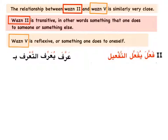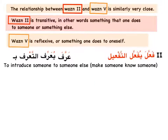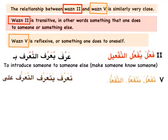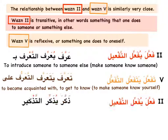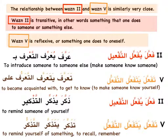For example: عَرَّف يُعَرِّف التعريف، عَرَّف بـ (arrafa yu'arrif al-ta'rif b) — to introduce someone to someone else, making someone know someone. That's wazn 2: the other subject is important, requiring two people for the action. Whereas wazn 5 — تَعَرَّف يَتَعَرَّف (ta'arrafa yata'arraf) — you can get introduced to a concept by yourself. Another example: ذَكَّر (dhakkar) — to remind someone of yourself — versus ذَكَر (dhakara) — to remember something yourself.